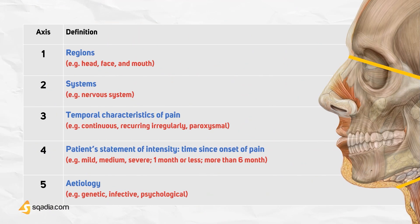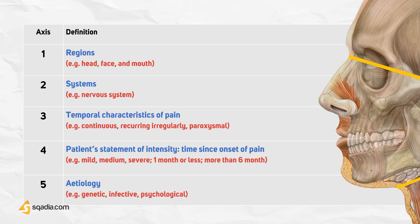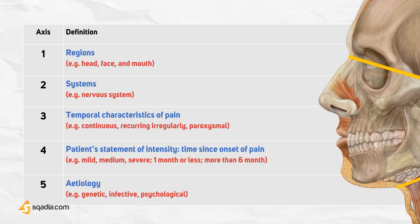The first axis includes regions — face, head, and mouth. The second includes systems such as the nervous system. The third includes temporal characteristics of pain, such as continuous, recurring irregularly, and proximal. The fourth includes the patient's statement of intensity with time since onset of pain — intensity can be mild, moderate, or severe, with time being less than one month or more than six months. And lastly is the etiology, which includes infectious, genetic, and psychological.